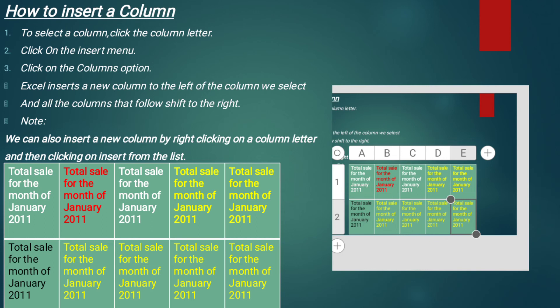Columns جو ہو vertical میں ہوتے ہیں اور rows horizontal میں. آپ picture میں دیکھ سکتے ہیں — A, B, C, D, E — اور ساتھ plus کا نشان ہے. Plus کے button پر click کریں گے تو F کا column بھی بن جائے گا. Same طریقے کا rows کے لیے بھی استعمال ہوتا ہے. We can also insert a new column by right-clicking on a column letter and then clicking on insert from the list — وہی right click والا تریقہ استعمال کریں گے.